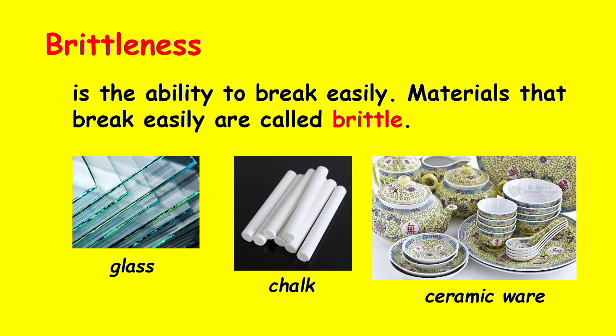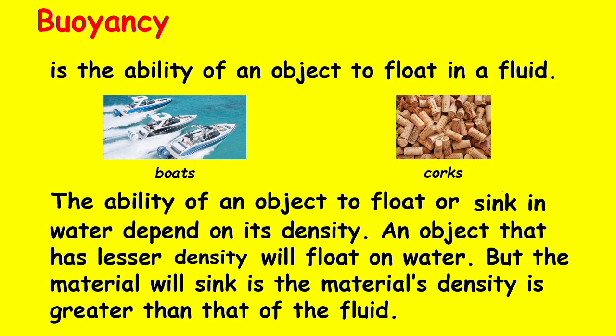Brittleness is the ability to break easily. Materials that break easily are called brittle. Examples are glass, chalk, and ceramic ware. Buoyancy is the ability of an object to float in a fluid. This property is shown by boats and corks. The ability of an object to float or sink in water depends on its density — an object with lesser density will float, but will sink if its density is greater than that of the liquid.